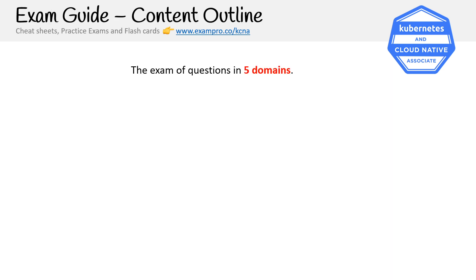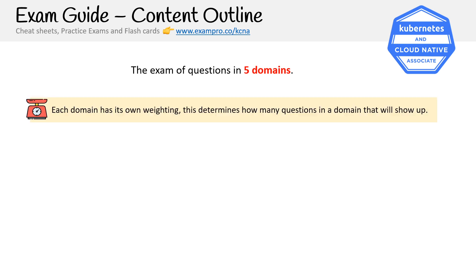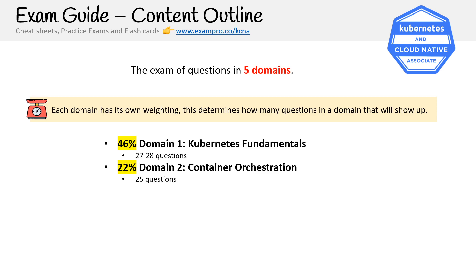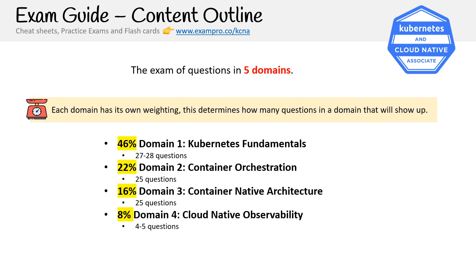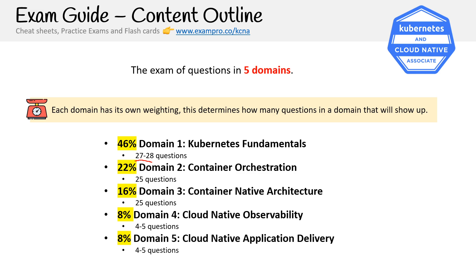The content outline has five domains, each with its own weighting that determines how many questions. We have: Kubernetes Fundamentals, Container Orchestration, Cloud Native Architecture, Cloud Native Observability, and Cloud Native Application Delivery. You'll see some say between 27 and 20 questions — that's because the math produces a decimal for how many questions per domain, so you could have one additional or one fewer on certain domains. Most of the exam is fundamentals, which is strongly focused on Kubernetes components.